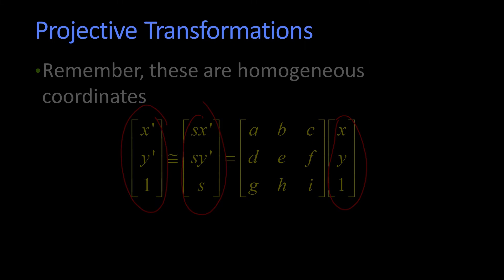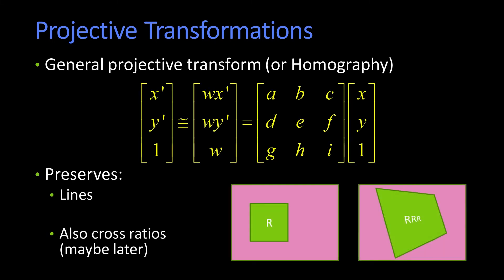So the full transformation is referred to as a general projective transformation, or a homography. And a homography still maps lines to lines, because remember we talked about perspective transforms always maintain lines. And things that are inside of each other stay inside of each other.